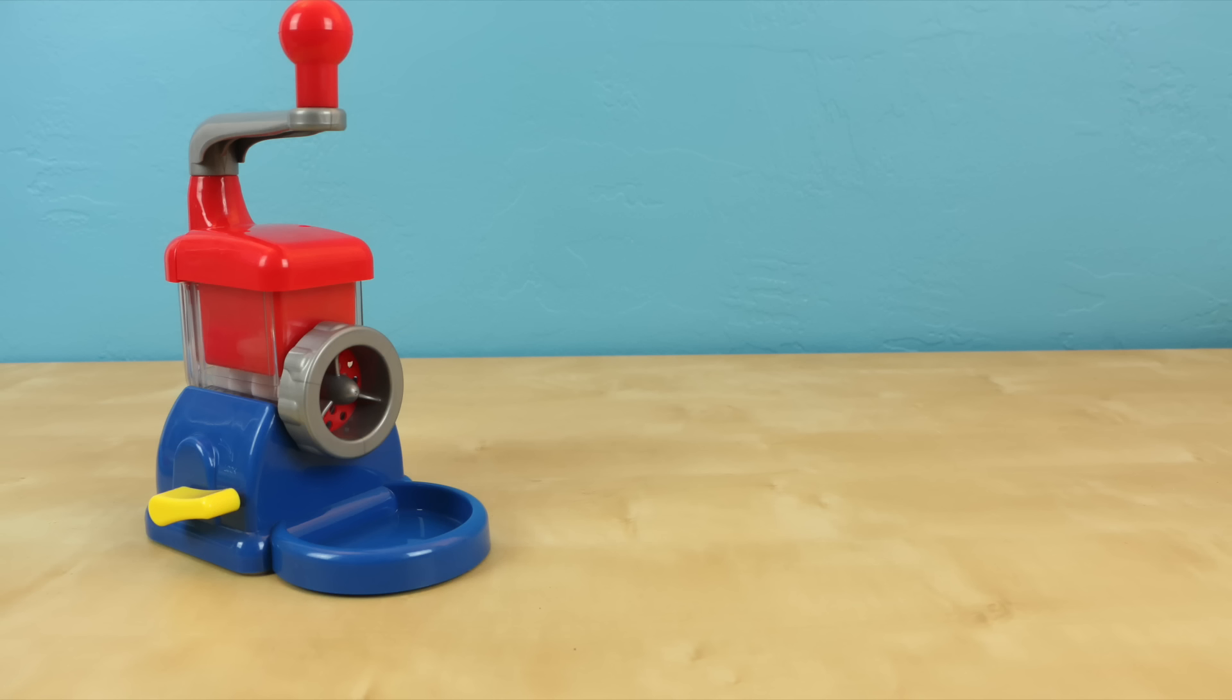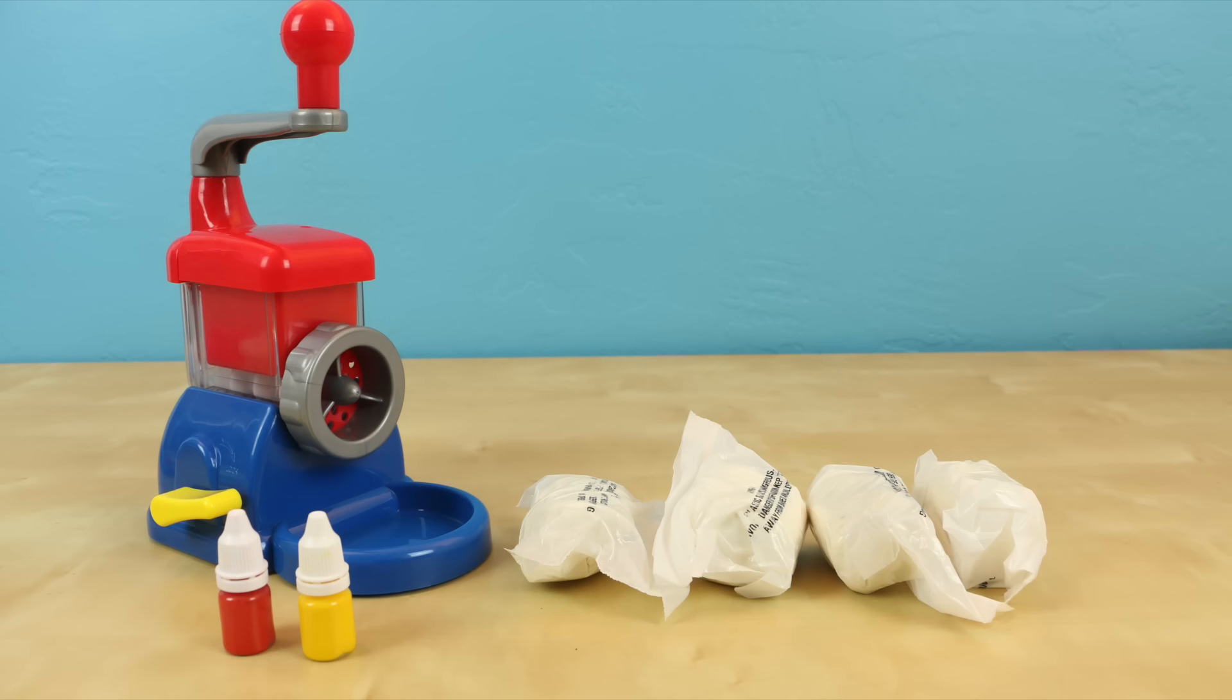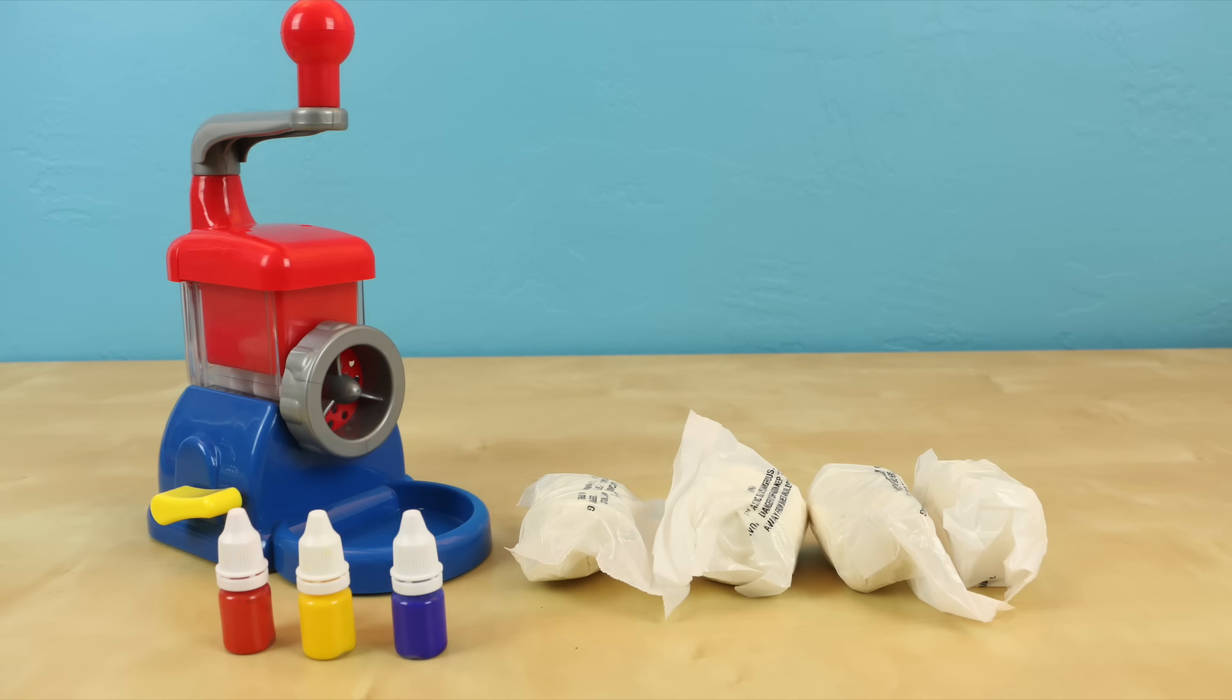So inside the box they give you one magic dough machine. It does come in three different parts but it's pretty easy to put together. Four bags of white softie dough. Three colors of dye including red, yellow, and blue.